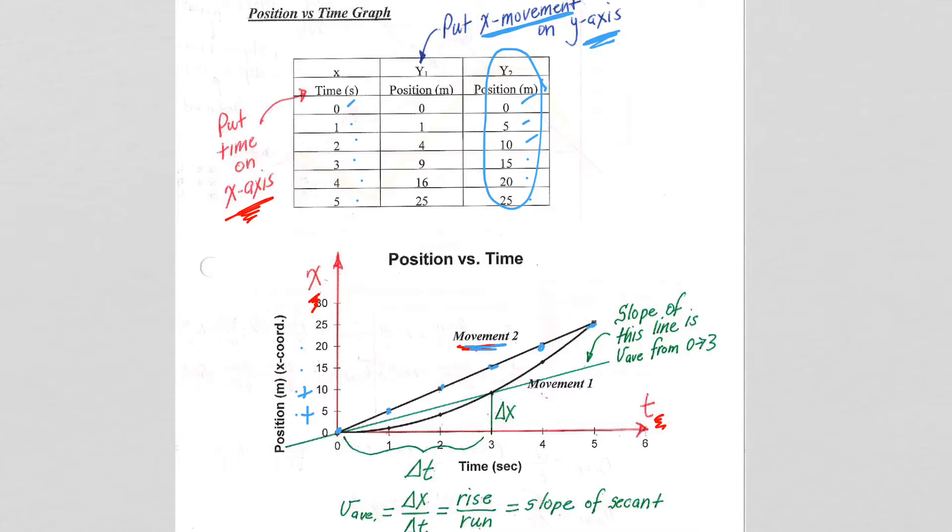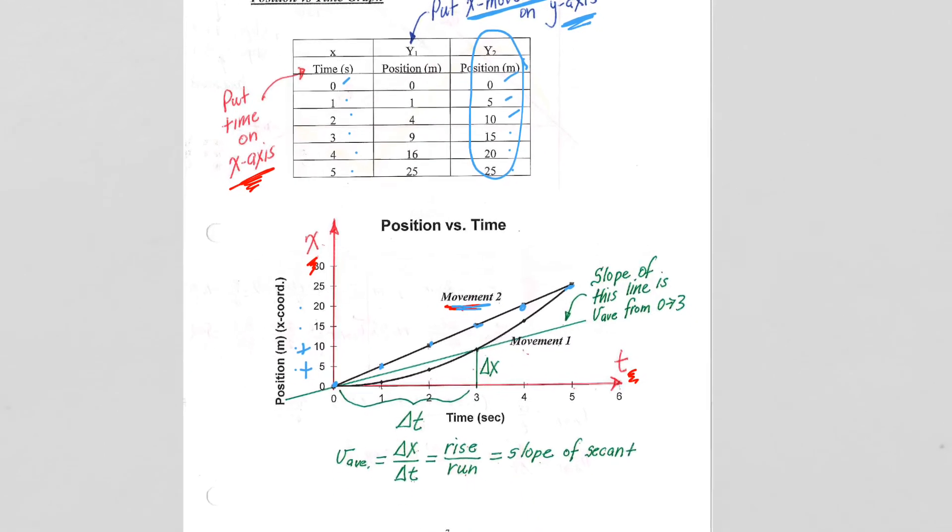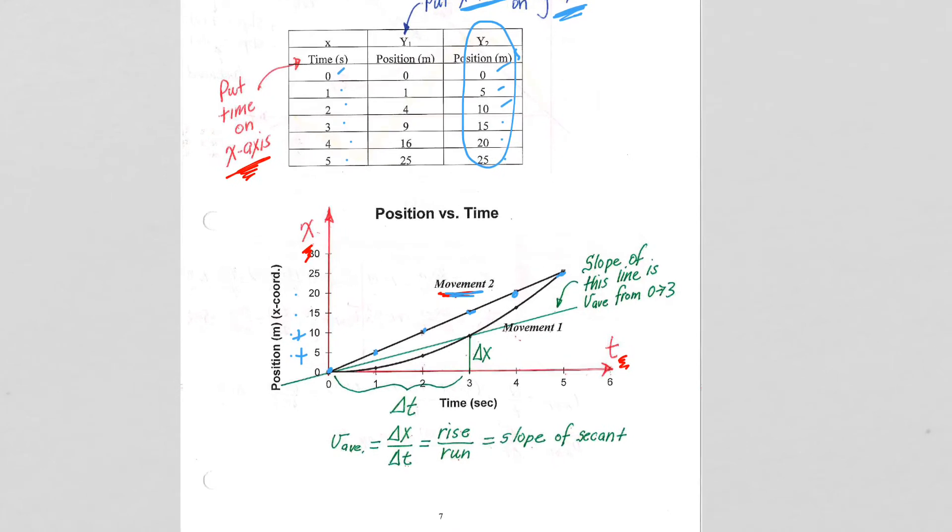Now, why are we doing this? We are doing this because, as it shows here in the annotations, when we look at the slope of a secant line, a line that intersects the function in two points, we get the average velocity.